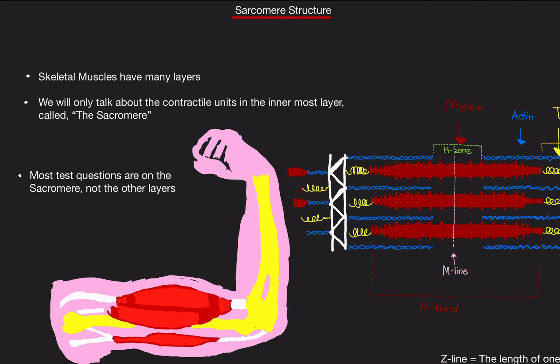Your skeletal muscles in your body are made up of many layers. The innermost layer is called the myofibril. Within the myofibril are sections called sarcomeres, and these sarcomeres are what do the contractions of the muscle.